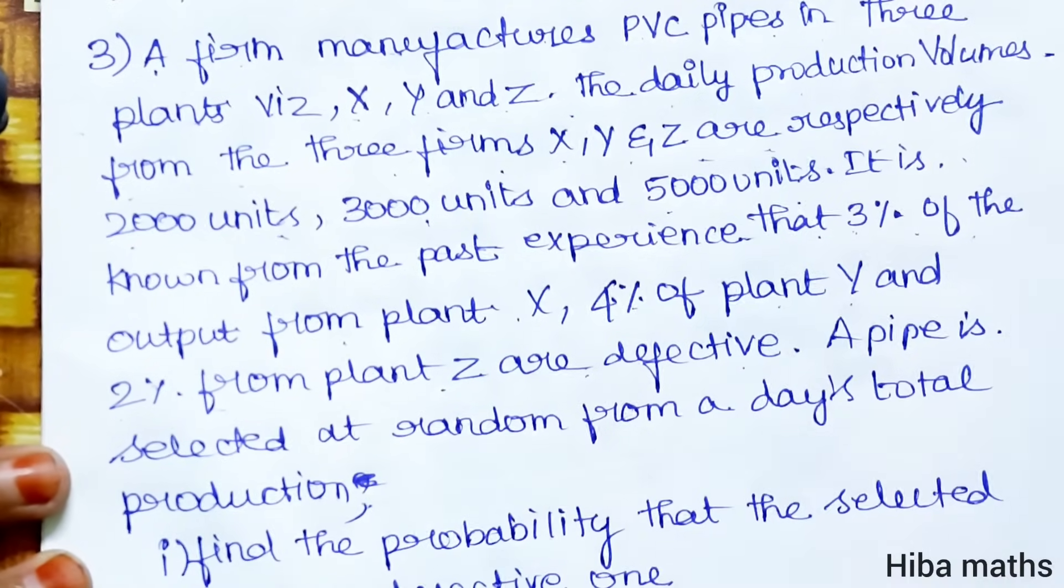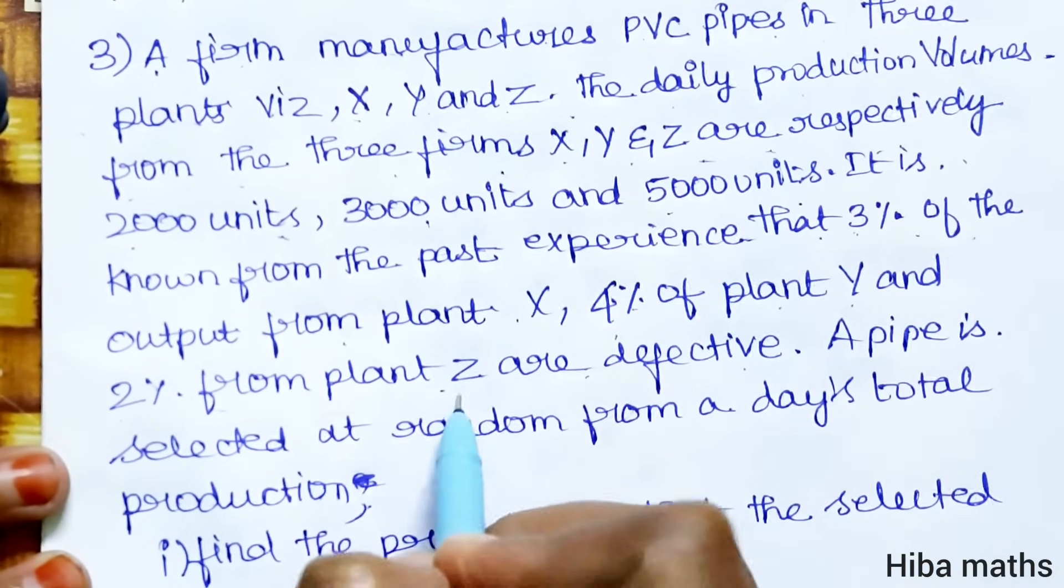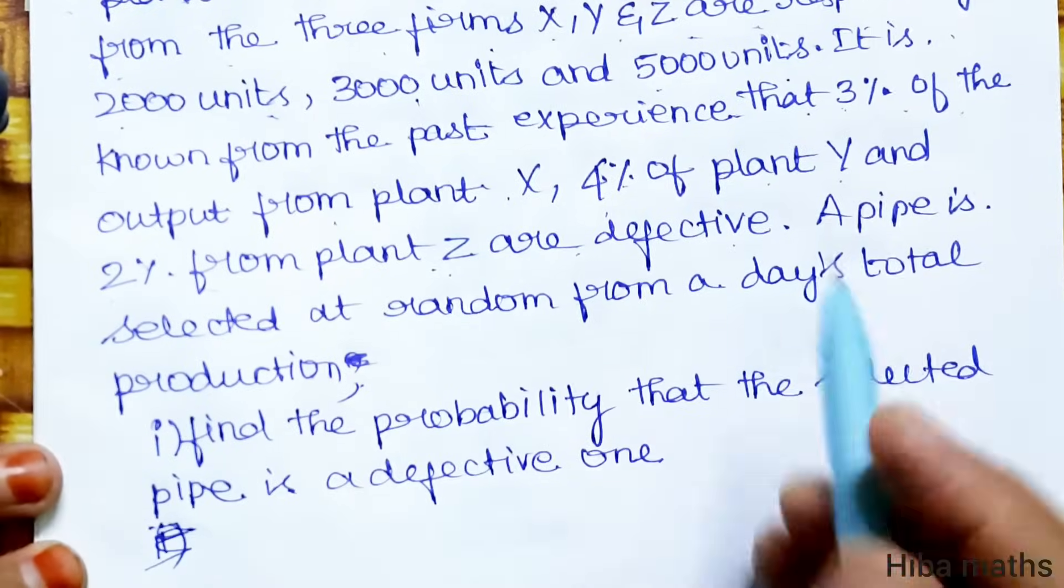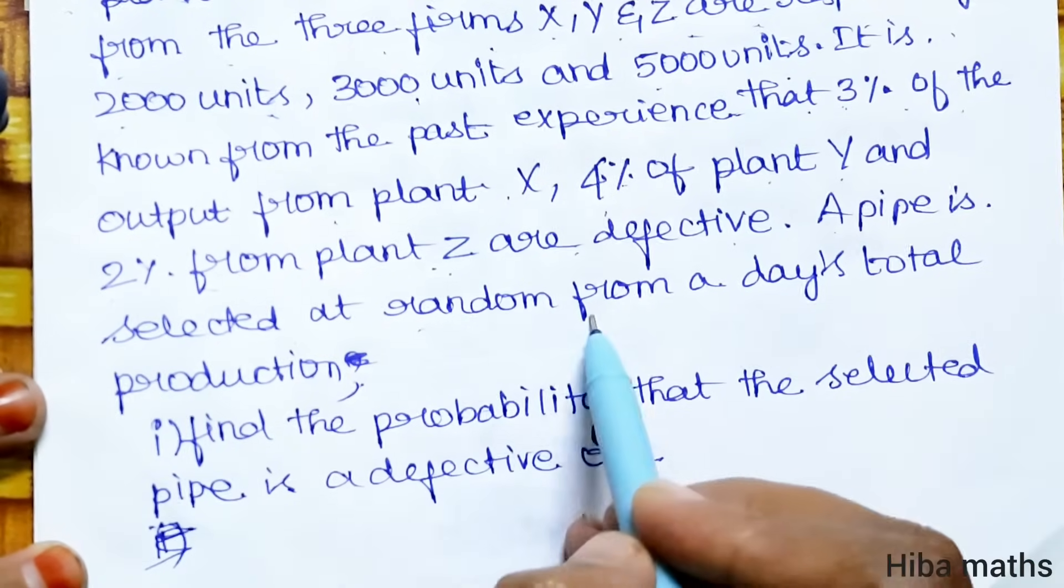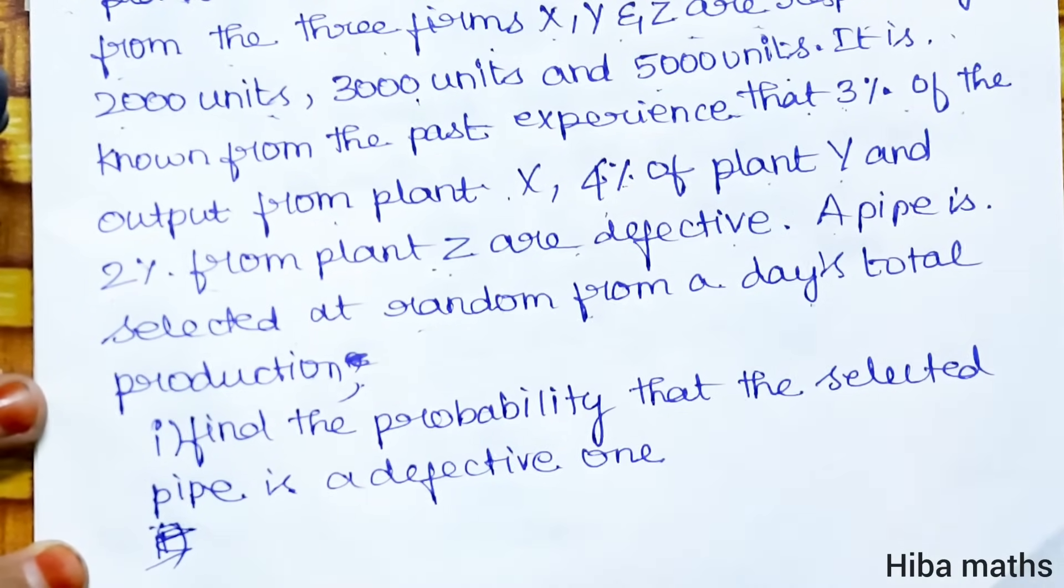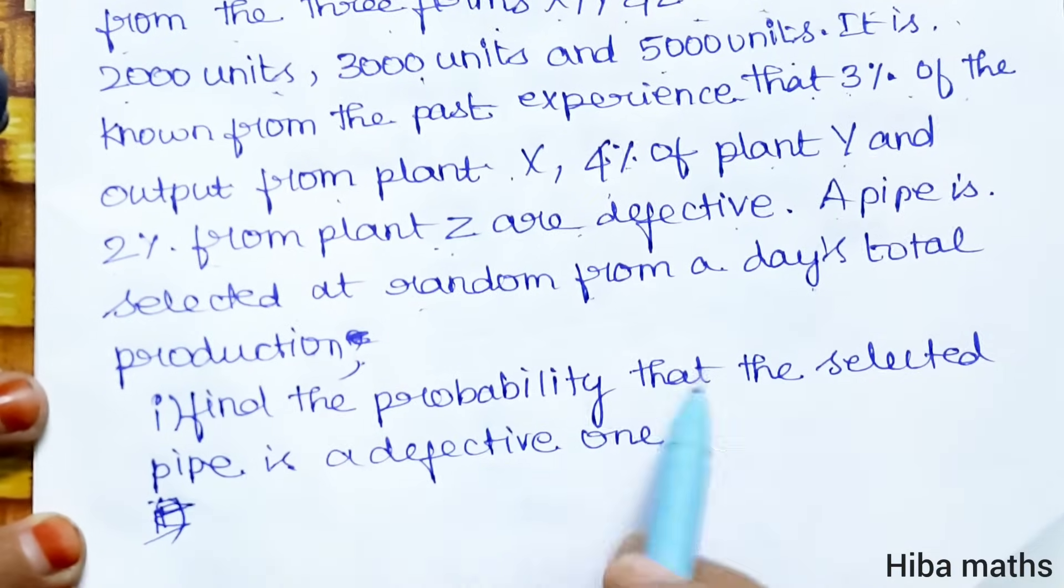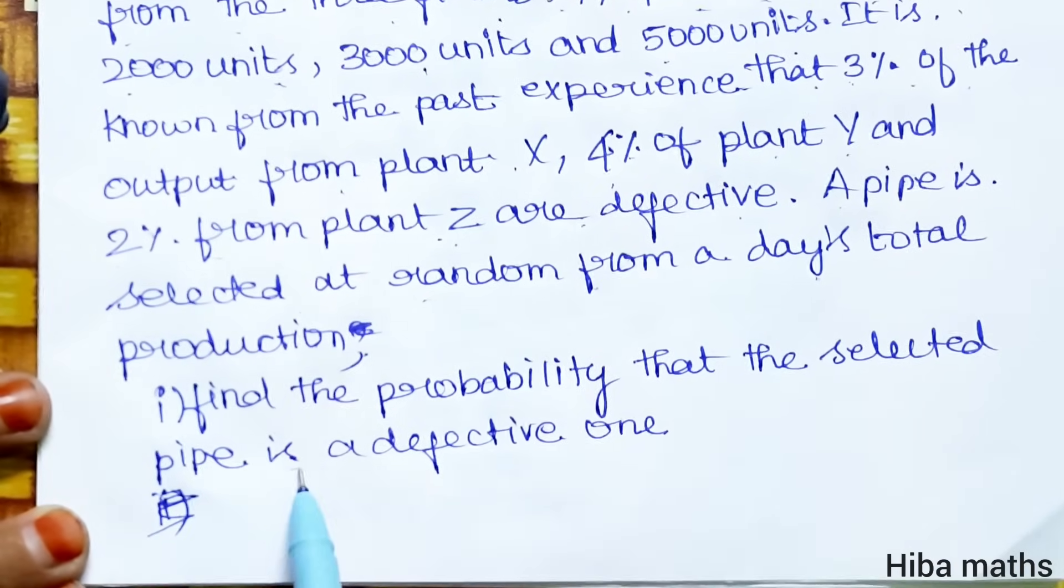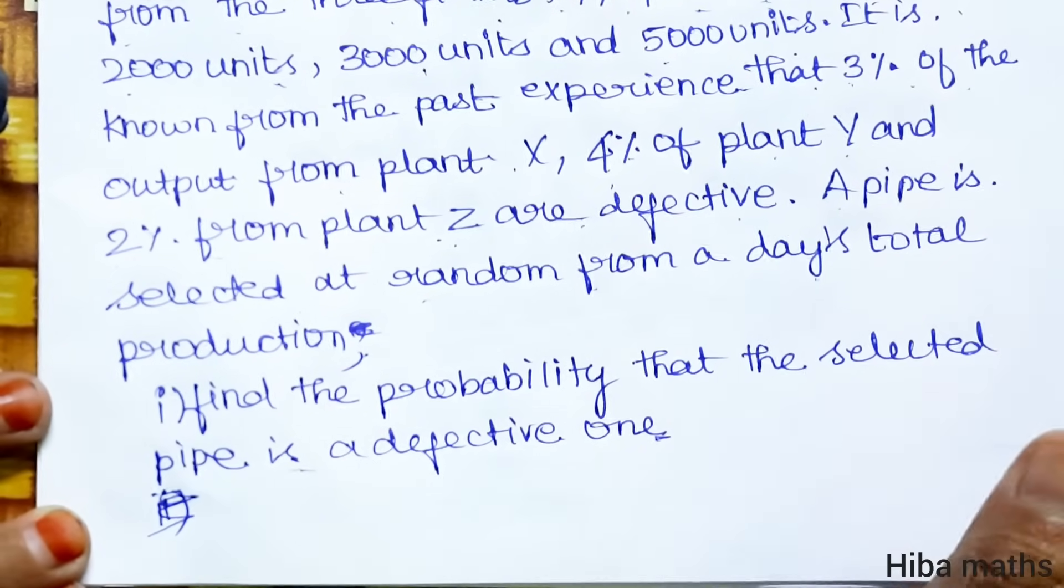Produced by X, X has 3% defect, Y has 4% defect, Z has 2% defect. Now, a pipe is selected at random from a day's total production. Find the probability that the selected pipe is a defective one.